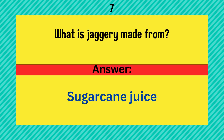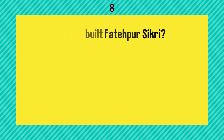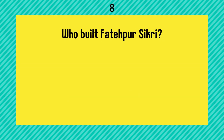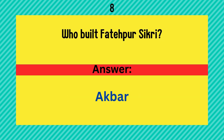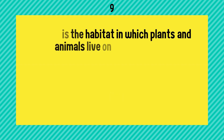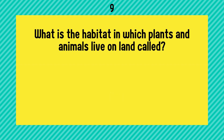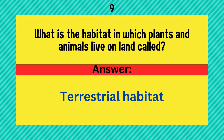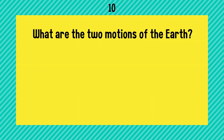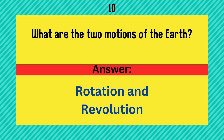What is jaggery made from? Answer is sugarcane juice. Who built Fatehpur Sikri? Correct answer is Akbar. What is the habitat in which plants and animals live on land called? It's a terrestrial habitat.